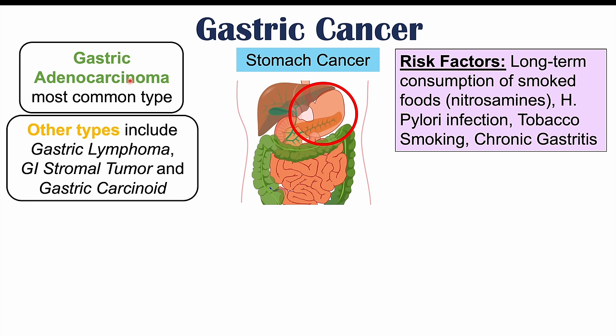Some of the risk factors for getting stomach cancer in general include long-term consumption of smoked foods — any foods with nitrosamine chemicals in them. Having an H. pylori or Helicobacter pylori infection, which is a stomach bacteria that can cause stomach ulcers and increase our risk for stomach cancer. Tobacco smoking is also another risk factor, as is having chronic gastritis or chronic inflammation of the stomach. These all increase the risk for stomach cancer.